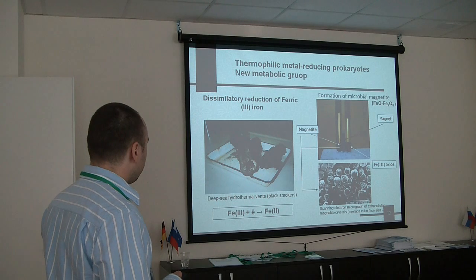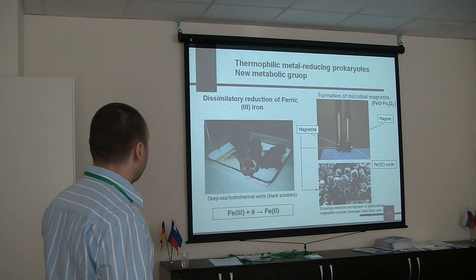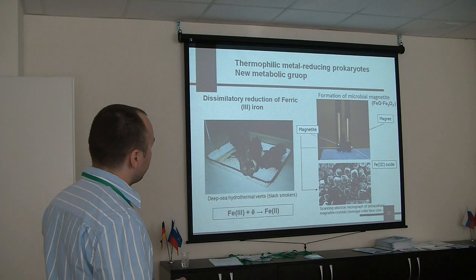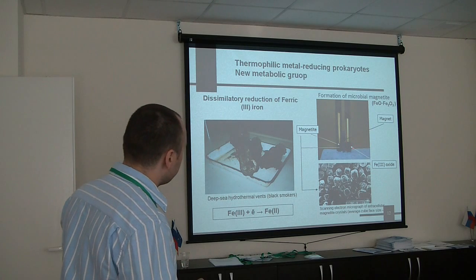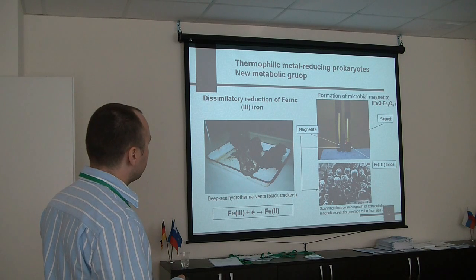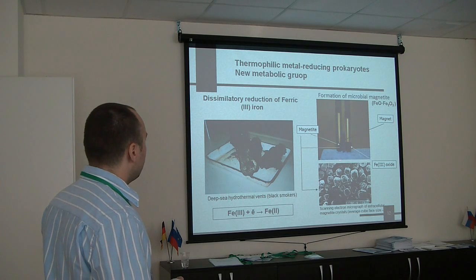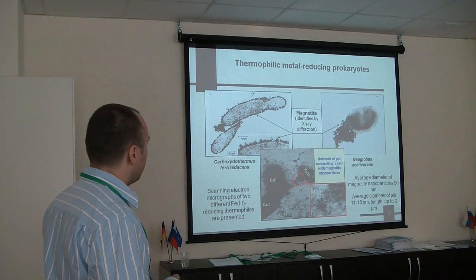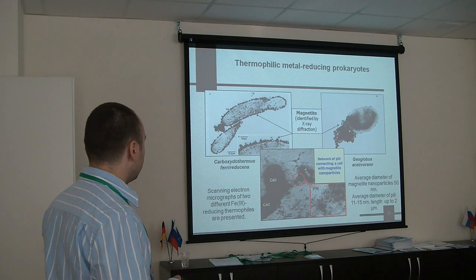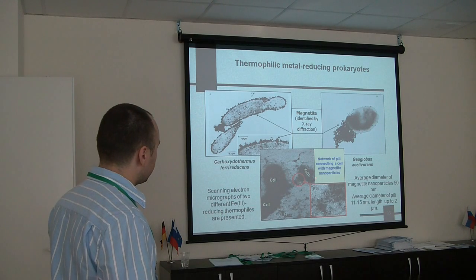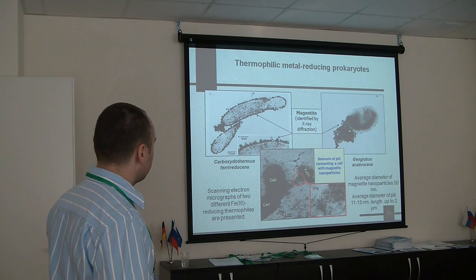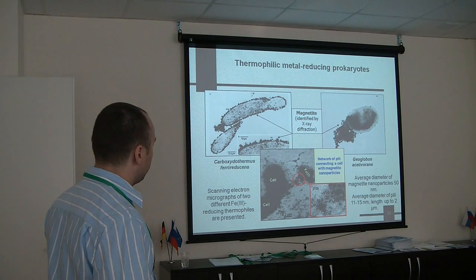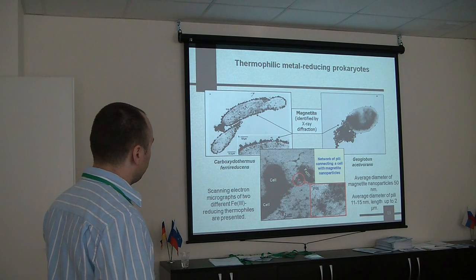The next group is thermophilic metal-reducing prokaryotes. First of all, it's thermophilic ferric iron reducers. They reduce ferric iron into ferrous iron. Ferric iron is red. Ferrous iron in the form of magnetite is black and attaches to a magnet. Magnetite forms as nanoparticles which are attached to the cells, or sometimes at some distance from the cell. Cells have different mechanisms — one of them is a special electron transfer pili structure which moves electrons to ferric iron to make ferrous iron.